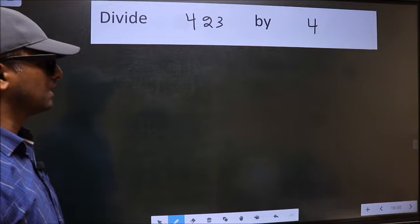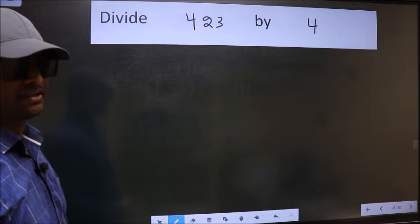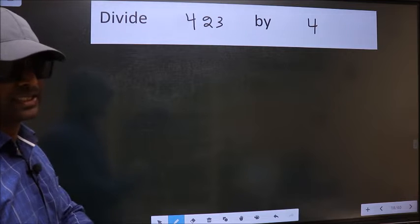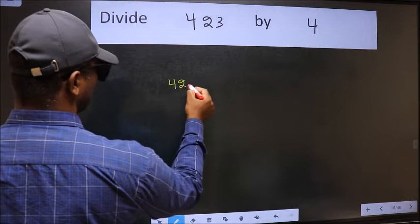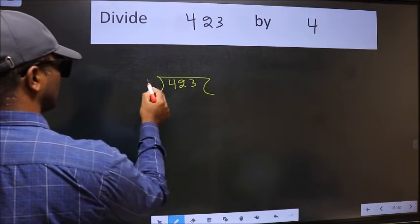Divide 423 by 4. To do this division, we should frame it in this way. 423 here and 4 here.